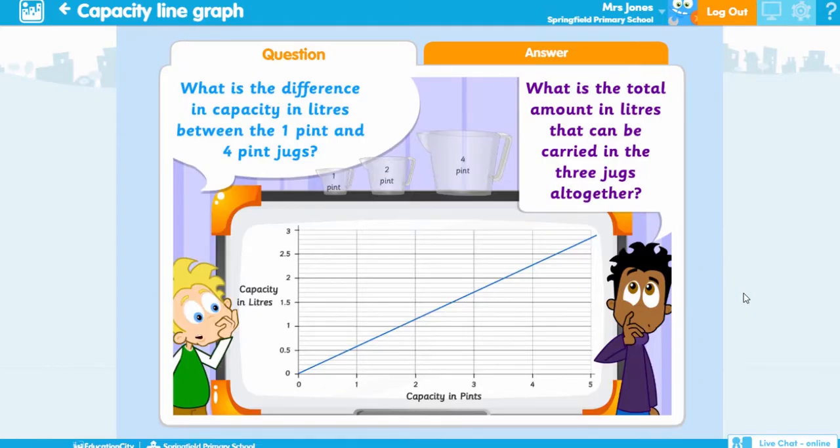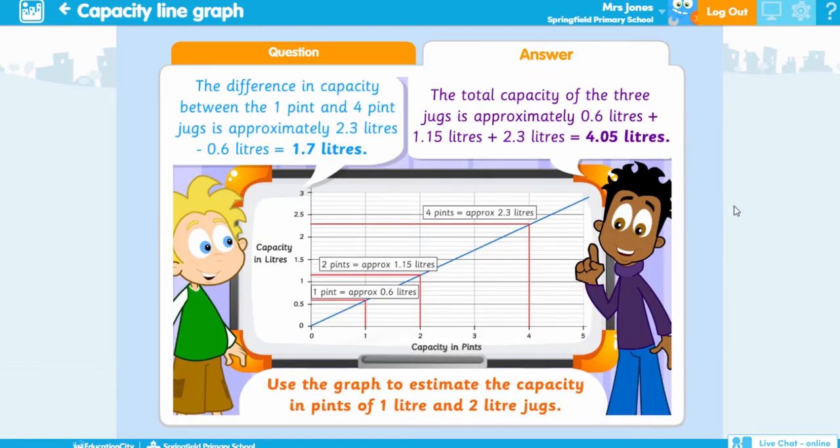There's even more content types to use in class too. Thinkits are designed to elicit students higher order thinking skills. These are great for use in pairs as a group or class and act as great activities for carousels or round robins.